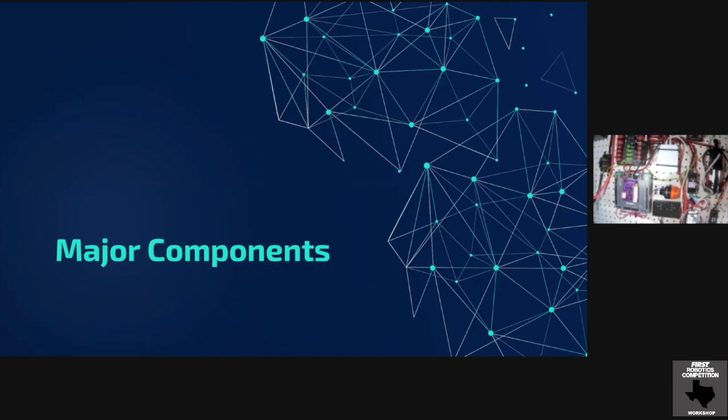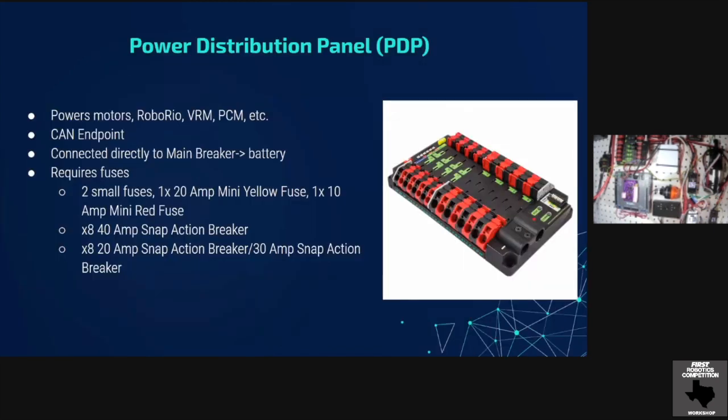So now we're going to go ahead and hit our major components. So the first major component of your FRC wiring control system is going to be your power distribution panel. So as you can see on the slide, the power distribution panel, basically what it's responsible for is sending power from the battery to almost all of the different components on your robot. It also is a CAN endpoint. So like Riley said earlier, CAN is a daisy chain through all of the different components and then over to your PDP. And then the other thing that the PDP is responsible for is it holds a number of breakers and fuses. And the cool thing about that is the PDP is essential in preventing your robot from browning out or pulling too much power.